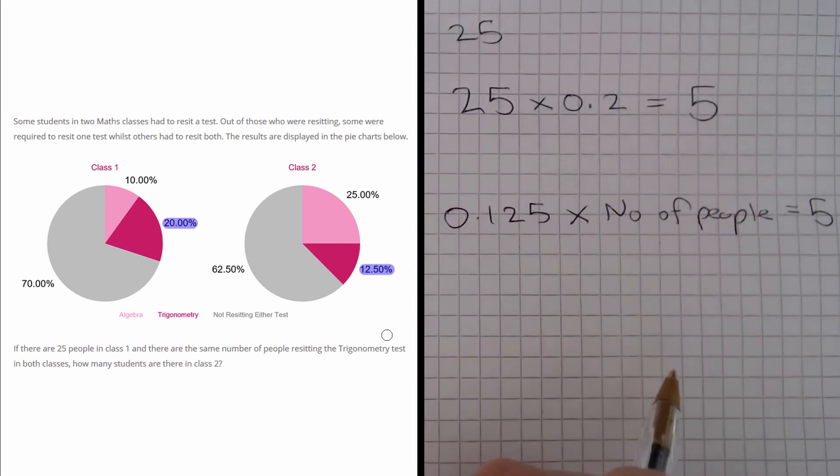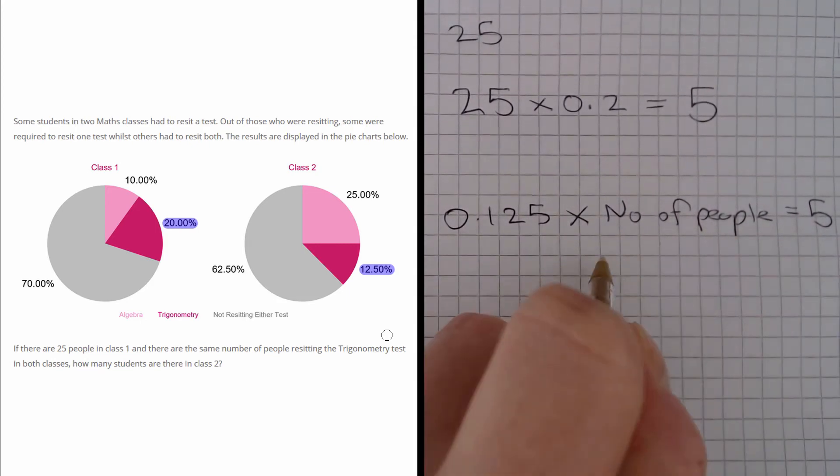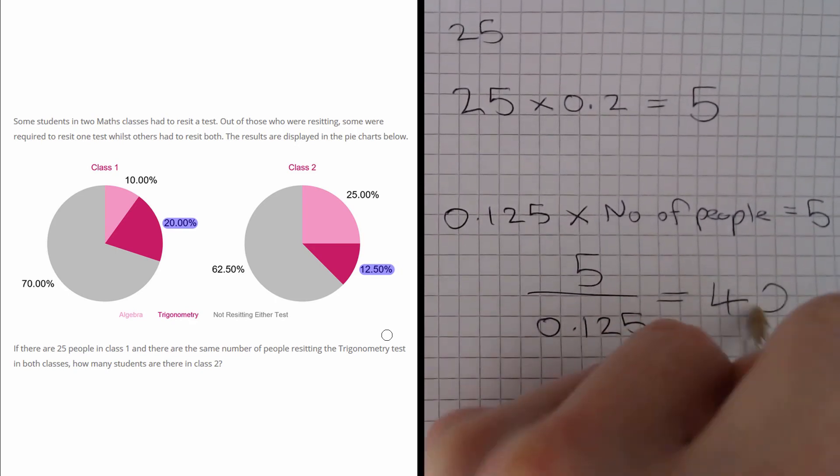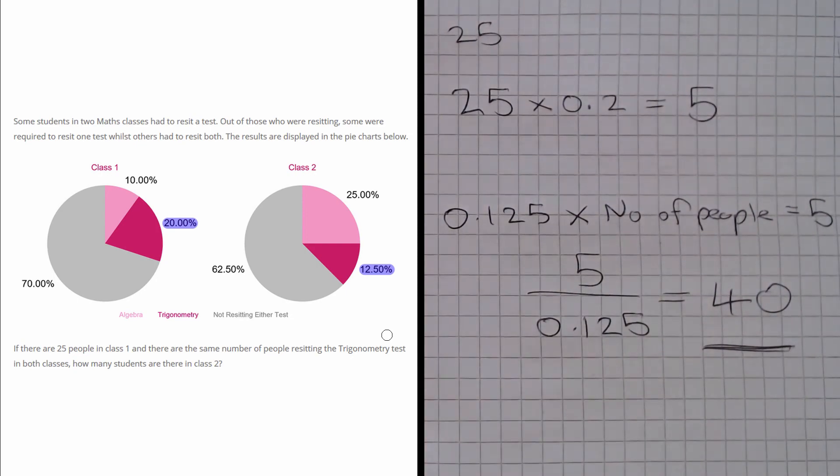So to get the number of people in class 2, the calculation we need to do is 5 divided by 0.125, which gives us 40. So there are 40 people in class 2.